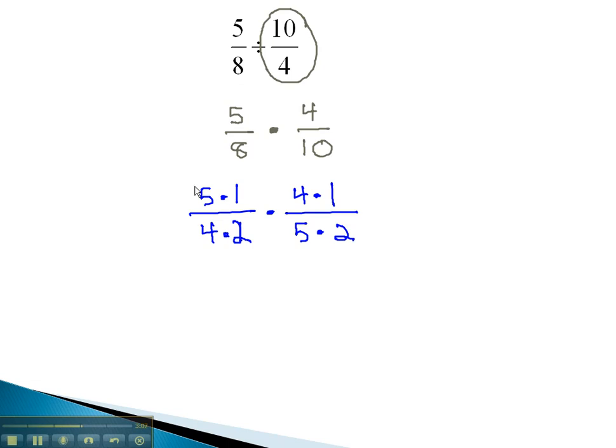We can now divide out the common factors of 5 and 4 that appear both in the numerator and the denominator. To get our final answer, we simply multiply across 1 times 1 is 1. In the denominator, 2 times 2 is 4, and we have our solution.